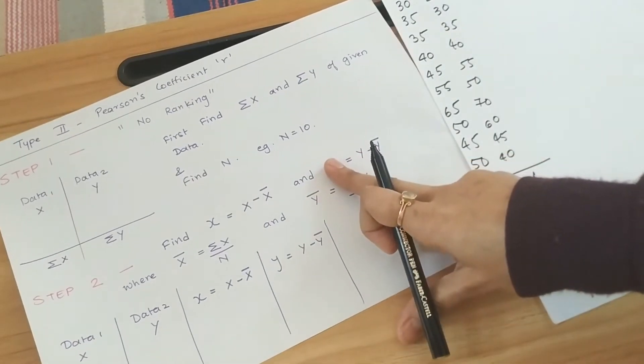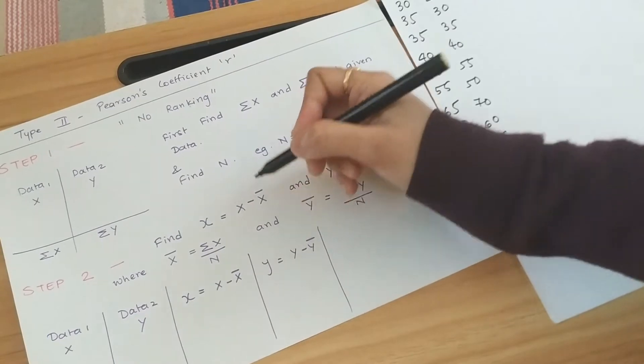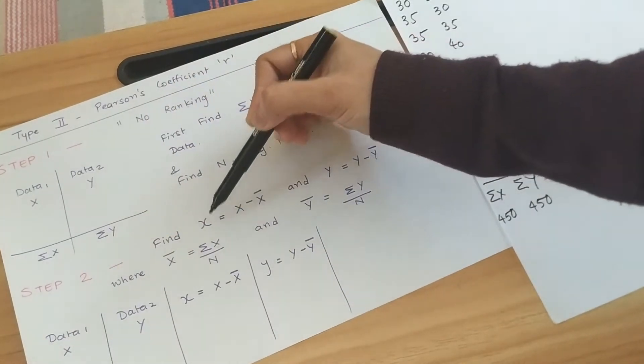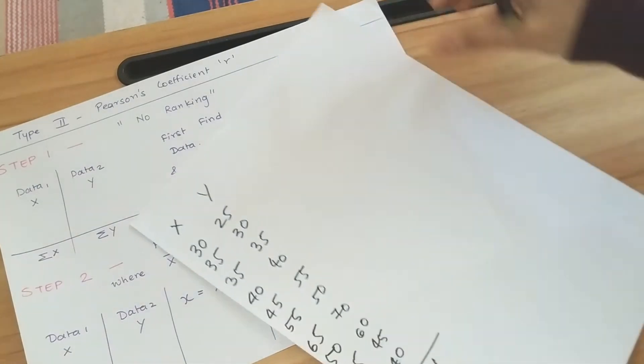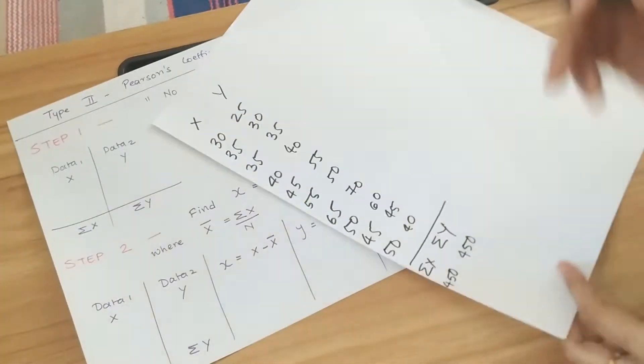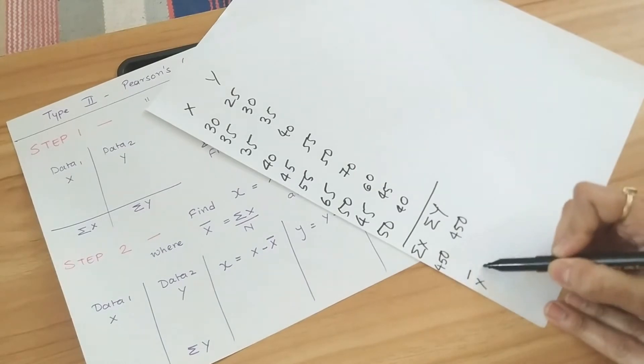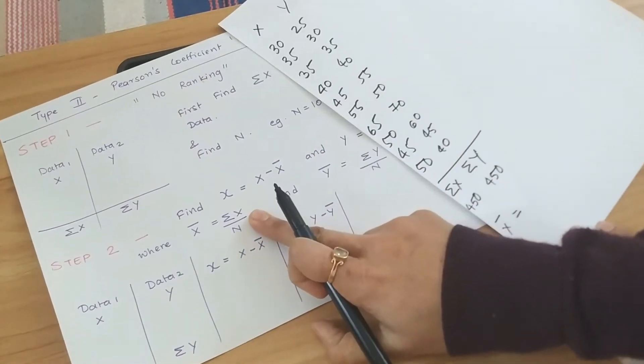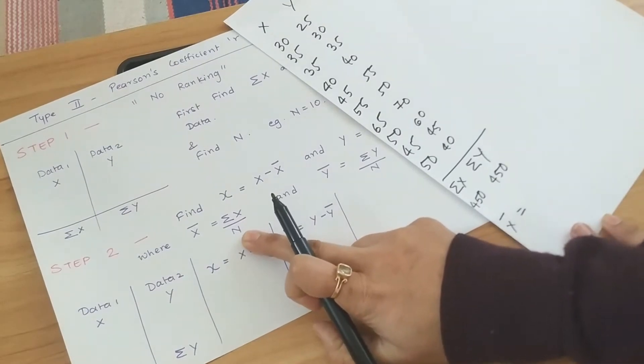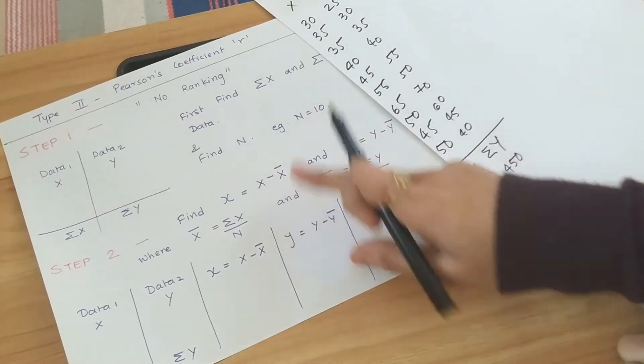Now let us find out the x bar. This is the step to find small x using the x minus x bar formula. So what is your x bar? x bar is summation of x divided by the number of elements.